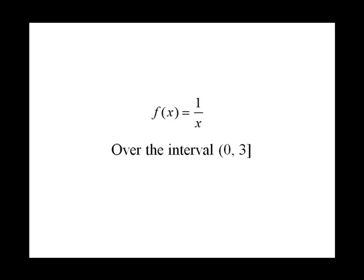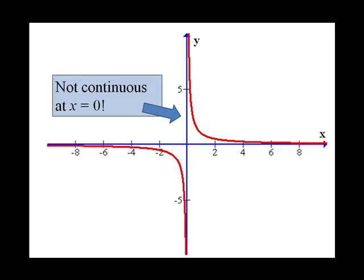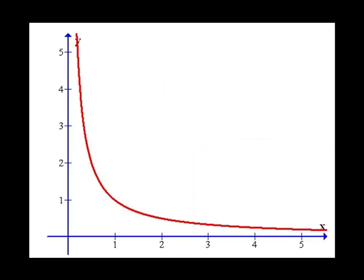Let's take a look at what's going on. Here's our graph, and we see that it's not continuous at x equals 0. Hence, we could not include that endpoint. So we'll only focus on this part of the graph from 0 to infinity.